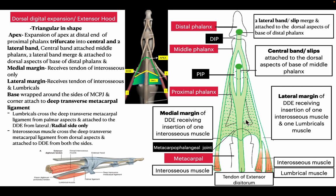As the tendons of extensor digitorum cross the metacarpophalangeal joints, they wrap around the sides of those joints. The expanded portion is known as the base part of the dorsal digital expansion, and the corners of this base are attached to the deep transverse metacarpal ligament. As seen in the diagram, the dorsal digital expansion — also known as the extensor hood — is triangular in shape. It has an apex, a base part wrapping near the metacarpophalangeal joints, a medial margin, and a lateral margin.